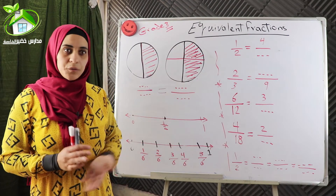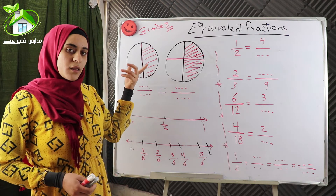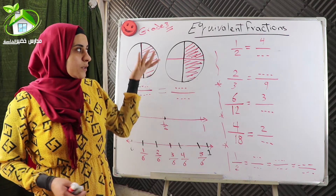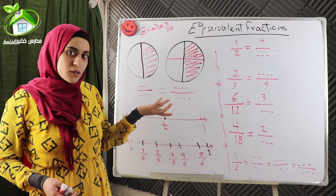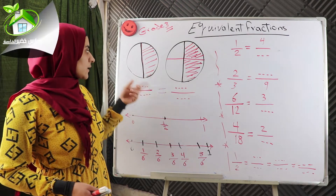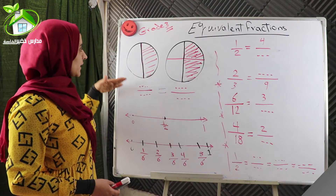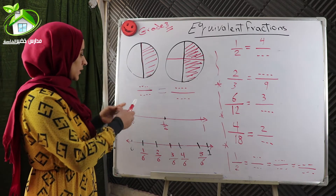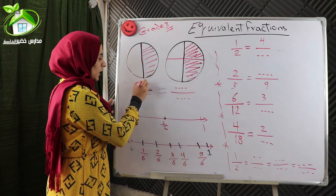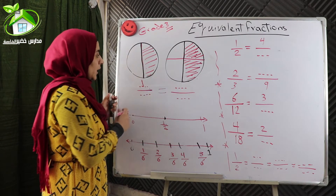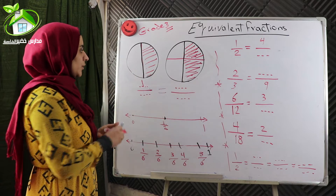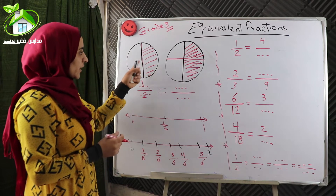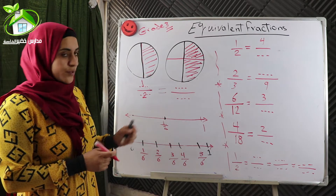What is the meaning of Equivalent Fractions? Let's see these shapes to understand what is the meaning of this name. The first shape has just one colored part. We write colored parts in the numerator and all parts in the denominator. All parts are two, so the first fraction is one over two.